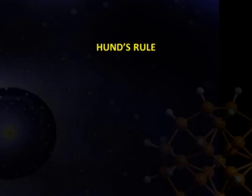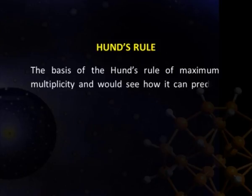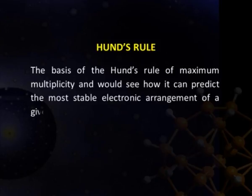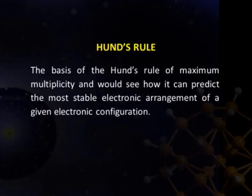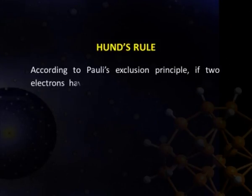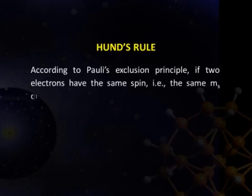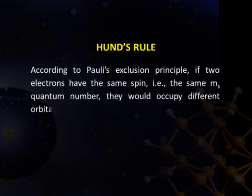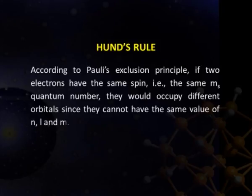Now I am going to discuss Hund's rule of maximum multiplicity, and how it predicts the most stable electronic arrangement of a given electronic configuration. According to Pauli's exclusion principle, if two electrons have the same spin, that is the same ms quantum number, they would occupy different orbitals since they cannot have the same values of n, l, and m.